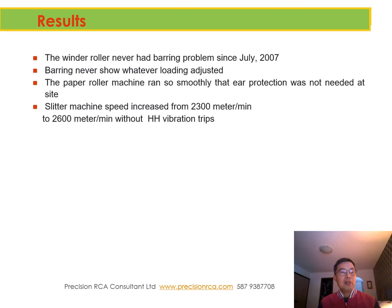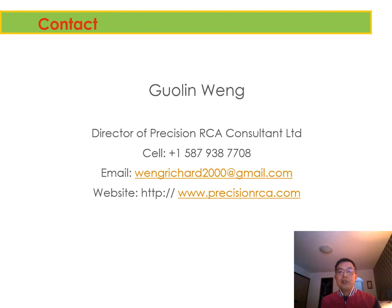Also, because the quality of the paper has improved a lot, the slitter machine speed was increased from 2,300 meters per minute to 2,600 meters per minute without high vibration chips. Before, every shift could have a dozen high vibration chips for the slitting machines — very much a headache for operators. From that day the operators were very happy about the results. If you have any barring problems and need help, you can contact me — my name is Gong Win, or you can call me Richard Win. I am director of Precision RCA Consultant Limited. You can email me at wenrichard2siren@gmail.com or visit our website at www.precisionrca.com. Thank you.